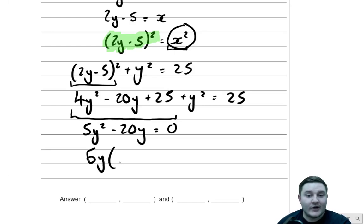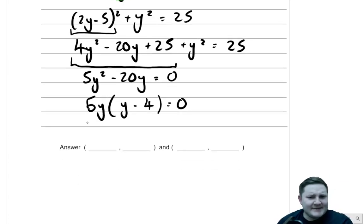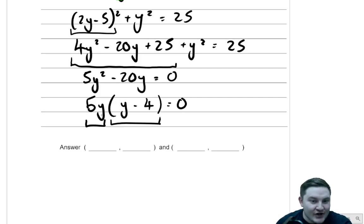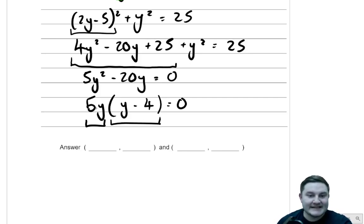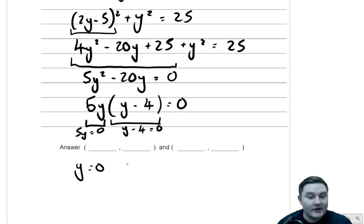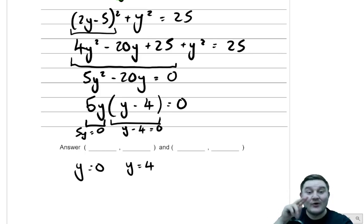Now we can factorise to solve. We get 5y brackets y take away 4 is equal to 0. Something times something equals 0, so one of those things must be 0. If 5y equals 0, then y equals 0. If y take away 4 equals 0, then y equals 4. So we've worked out both y coordinates for our points of intersection.